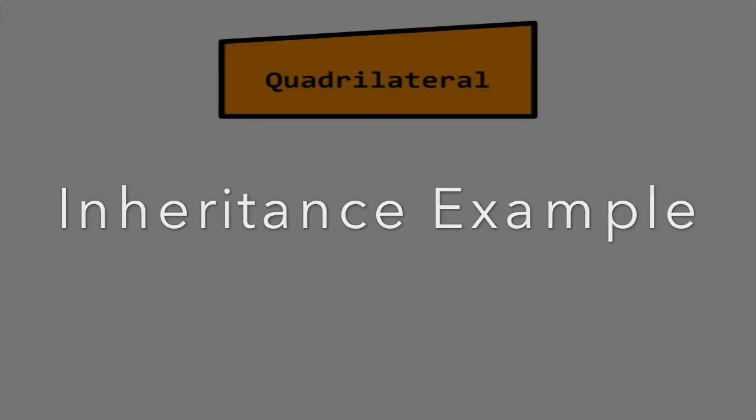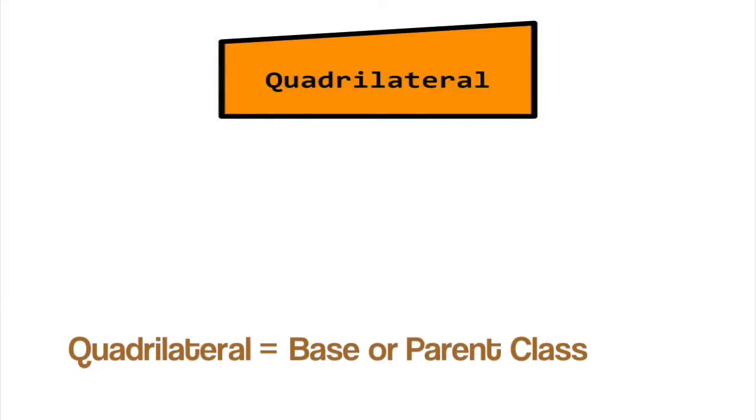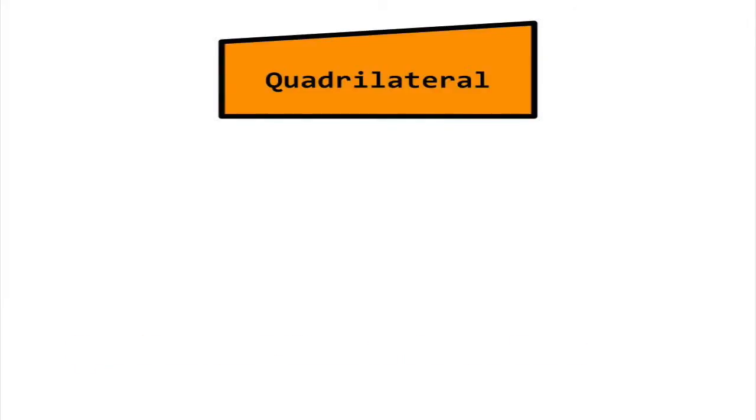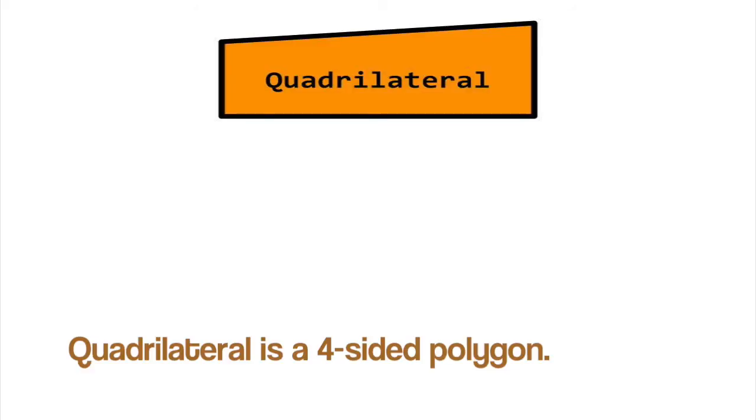Here's an example. Suppose we have a class named Quadrilateral. This class is the template from which we build four-sided polygon objects.